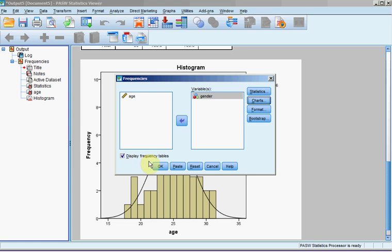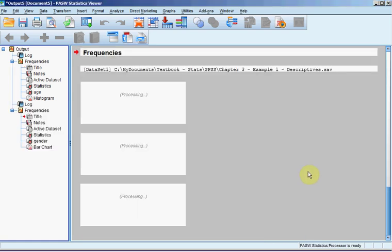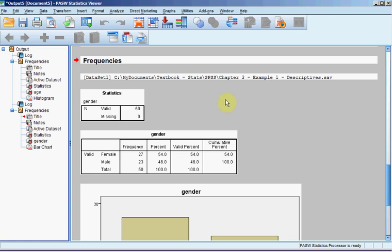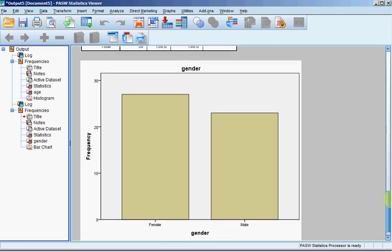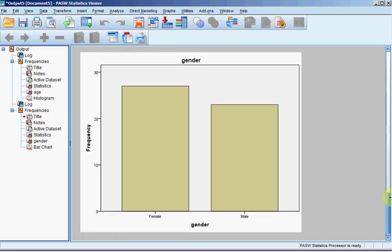And we'll keep the Display Frequency table box checked. We press OK, and it processes. We see here that 50 data elements have been processed for gender, and we see that for female, there's 27, which constitutes 54%. For males, there's 23, which constitutes 46%. And we see that represented here in the bar chart that we ordered.